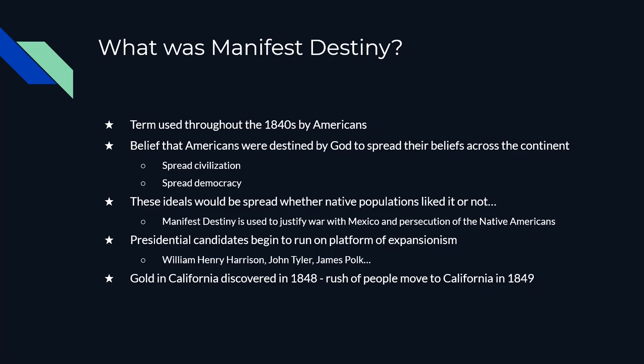Almost every president of the 1840s is going to run on a platform of expansion. You've got William Henry Harrison, John Tyler, and James K. Polk. William Henry Harrison is famous for defeating Tecumseh and the Prophet, so he had no problem taking land from Native Americans. We also have gold being discovered in California in 1848, causing a gold rush in 1849, and thousands of people moving to California as well.